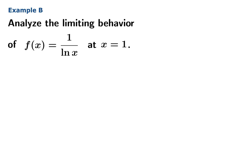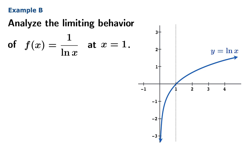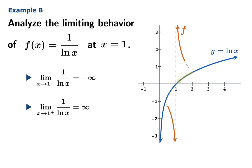To analyze the limiting behavior of the reciprocal of the logarithm function at x equals 1, let's sketch ln(x) first. As x approaches 1, the limiting value of the logarithm is 0, which indicates we're going to have some infinite limiting behavior for the reciprocal function. As you approach 1 from the left, since the values are all negative, the limiting value is negative infinity. As you approach 1 from the right, since the values of ln are all positive, the limiting value is positive infinity. Since these values don't match up, the flat-out limit as x approaches 1 does not exist.